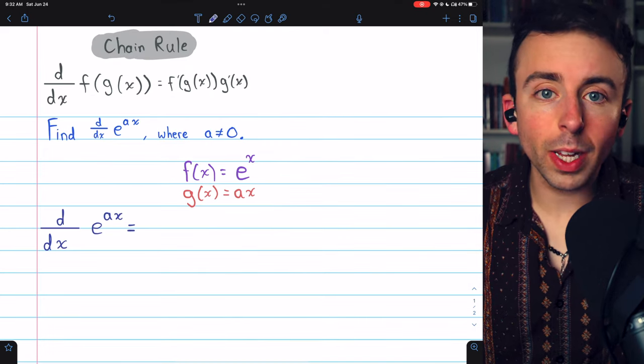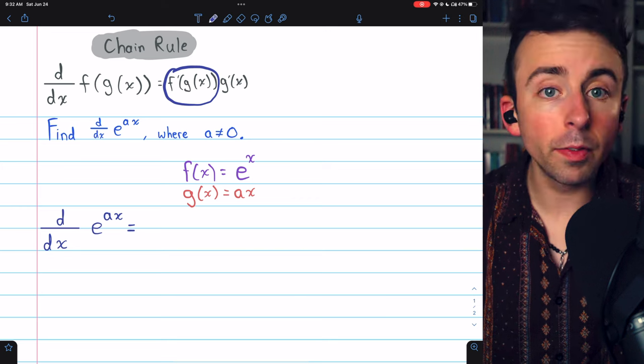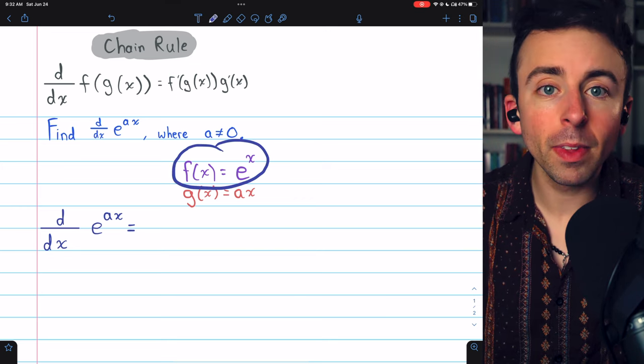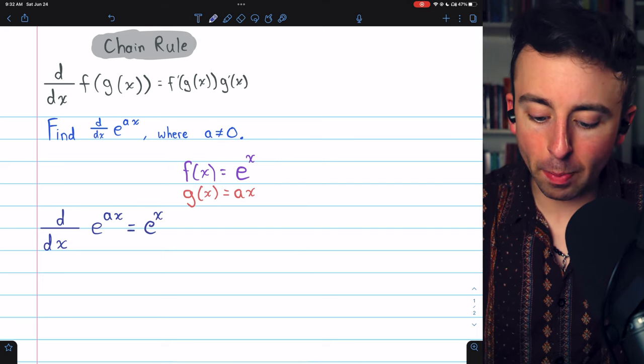Now it's straightforward to apply the chain rule. The chain rule tells us the derivative will be f prime of g of x. The derivative of the outside function, f prime, is e to the x, because the derivative of e to the x is e to the x. But remember,